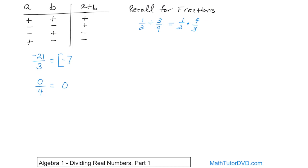What about negative 25 divided by five? You have a negative number divided by a positive number. First divide the numbers: 25 divided by five is five. Negative divided by positive — opposite signs — gives you negative five.